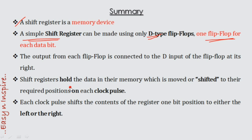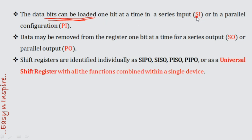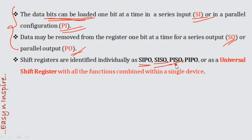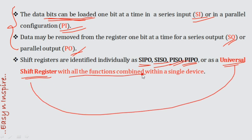Shift registers are used to hold, transfer, and shift data, and we can transfer data from left to right as well as right to left. Data bits can be loaded in serial input or parallel input format, and output can be taken as serial output or parallel output. Based on these parameters we have SISO, SIPO, PISO, and PIPO. There is also a universal shift register, which combines all the functions of these four types in a single device.